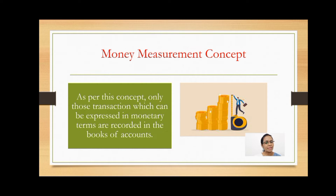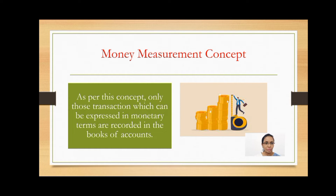The next concept is the Money Measurement Concept. As per this concept, only those transactions which can be expressed in monetary terms are recorded in the books of accounts. For example, honesty or efficiency towards work will not be recorded as they cannot be expressed in terms of money, but if a business has machinery, land, and building, these are expressed in monetary terms and so are recorded in the books of accounts.